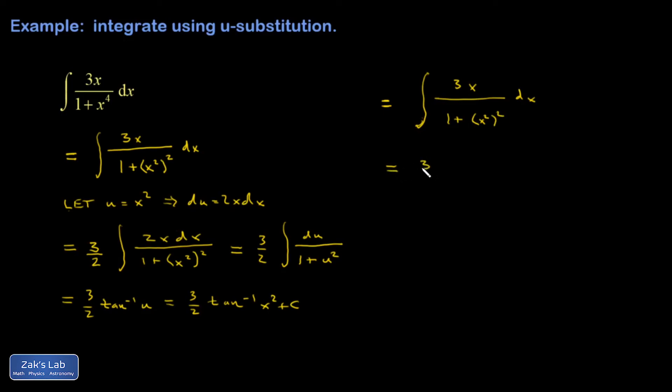So I'm just going to pull that 3 out, divide by 2 on the outside, multiply by 2 on the inside. And now I recognize that I have what I would get if I differentiated the inverse tangent of x squared.